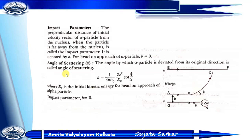The angle of scattering of the alpha particle from its original direction is called the angle of scattering. The formula is: b equals (1/4πε₀) × (Ze²/Ek) × cot(θ/2), where Ek is the initial kinetic energy. For head-on approach, b equals zero.